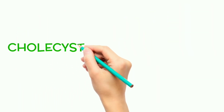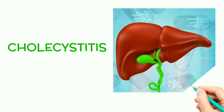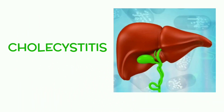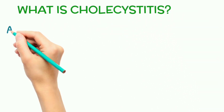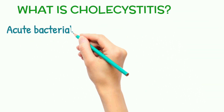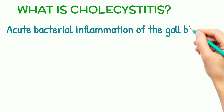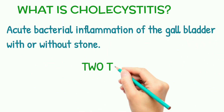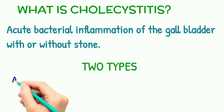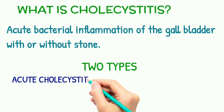Welcome to Dynamic Medicals. Today in this video I am going to talk about cholecystitis. Cholecystitis is an acute bacterial inflammation of the gallbladder, with or without stones. There are two types: acute cholecystitis and chronic cholecystitis.